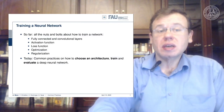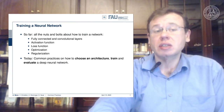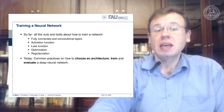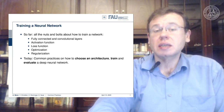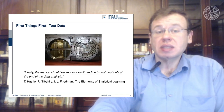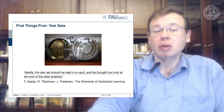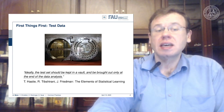So far we have seen all the nuts and bolts of how to train the network. We have the fully connected and convolutional layers, the activation function, the loss function, optimization, and regularization. Today we will talk about how to choose the architecture, train, and evaluate a deep neural network. The very first thing is test data — test data goes into the vault. Ideally, the test set should be kept in a vault and brought out only at the end of the data analysis, as Hastie and colleagues teach in the Elements of Statistical Learning.